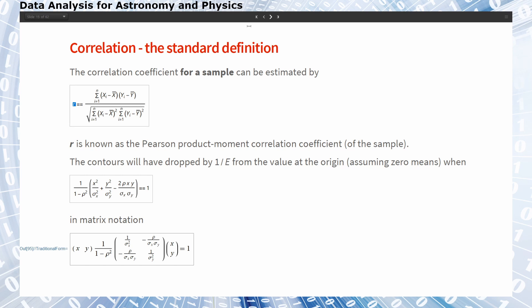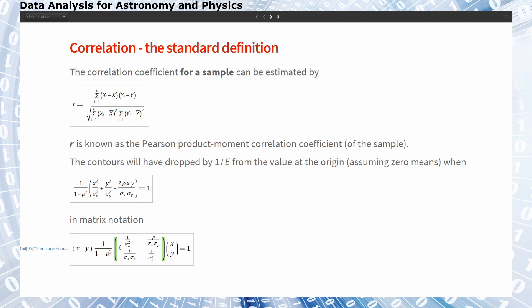We saw in the previous slide the contour plots of the bivariate Gaussians. The contours drawn will have dropped by 1/e from the value at the origin when we reach these conditions. In matrix notation this can also be written compactly, with a matrix that depends only on the variances in x and y and the covariance term and the correlation coefficient.